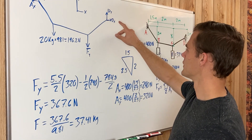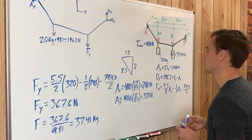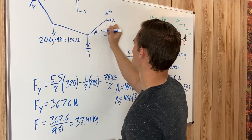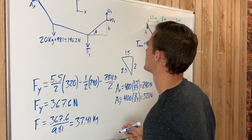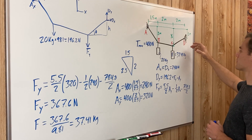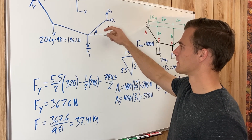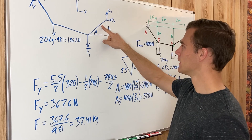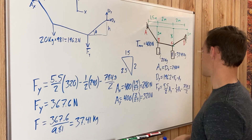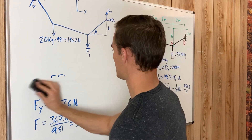Now we need to find y sub c. We'll do this by finding the slope of segment C-D. We draw a small triangle created by that segment, with an angle theta and a vertical side h. If we find h, then y sub c equals h plus 1. We'll find theta using the reaction forces at D.